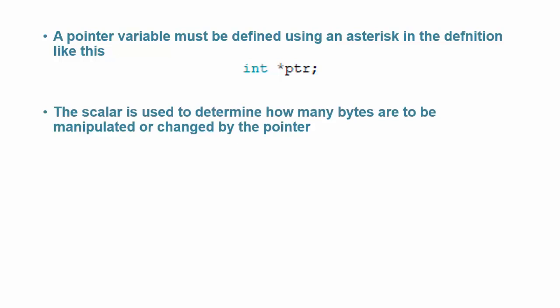The scalar of the pointer is determined at the time the pointer variable is defined. The pointer's type specifier determines the scalar. The scalar is used to determine how many bytes are to be manipulated or changed by the pointer.